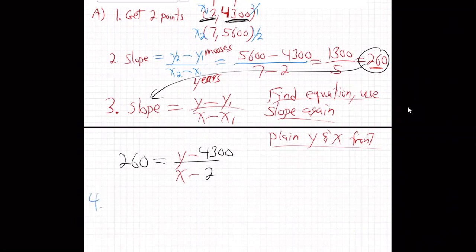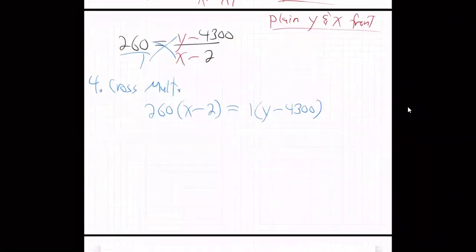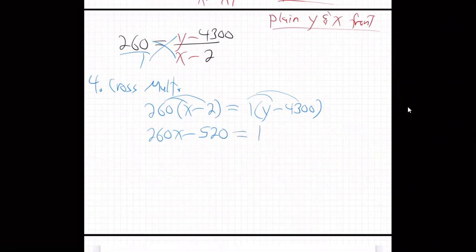And then step four. Cross multiply. Put this over one. Diagonal, diagonal. It's getting easy. 260, X minus 2 is 1, Y minus 4,300. Oops. Distribute. Distribute. 260X minus 520. Yeah, 520, right?